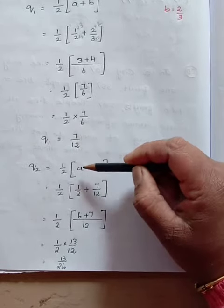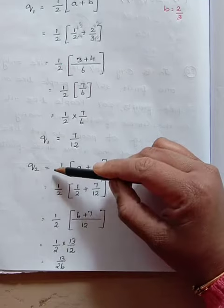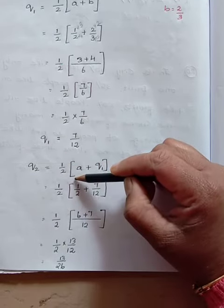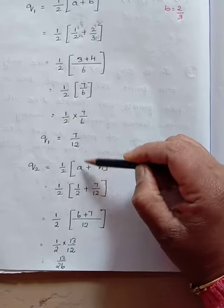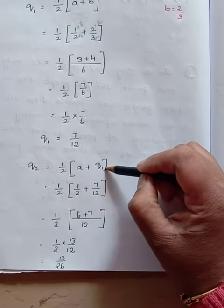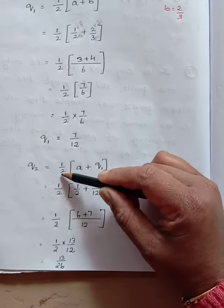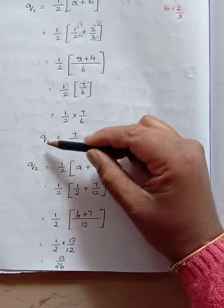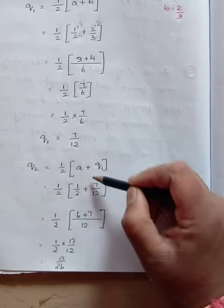Now let us find the second rational number. Q2 equals 1/2 into A plus the first rational number. So half into A plus Q1, where Q1 value is 7/12.